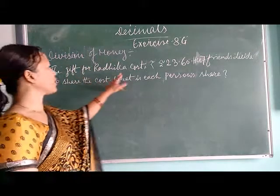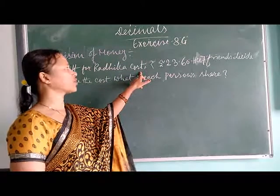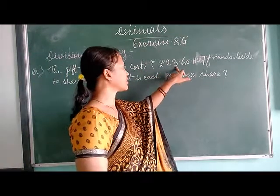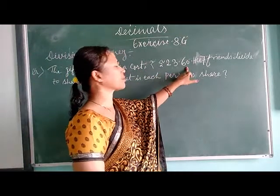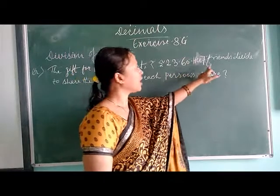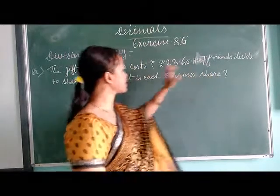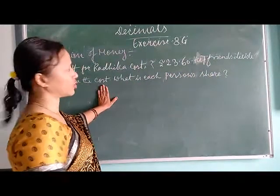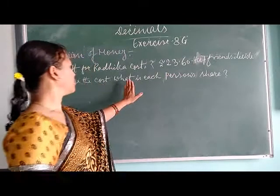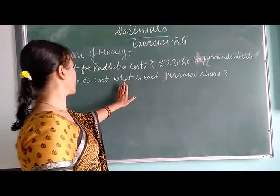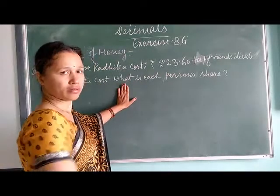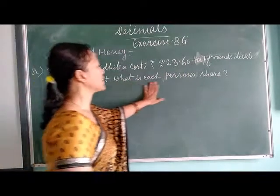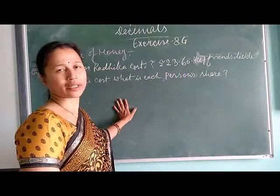The gift for Radhika costs 523.60 pounds. Her 7 friends decide to share the total cost among the 7 friends. What is each person's share?